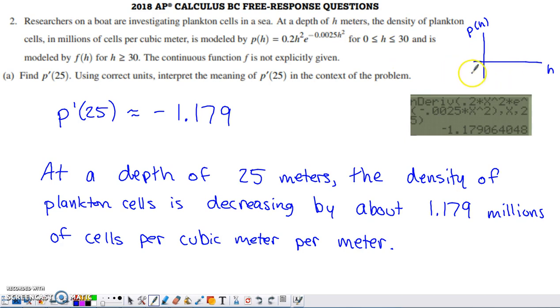So the units of this derivative would be the units of y divided by the units of x, since derivatives are just special slope calculations. So the units, I have them at the tail end of my explanation here, millions of cells per cubic meter, those are the units of y, per meter, units of x.